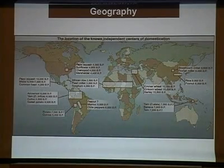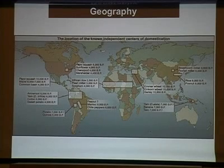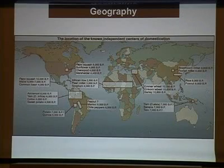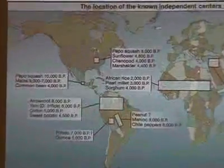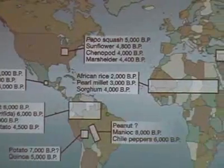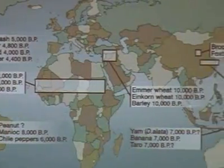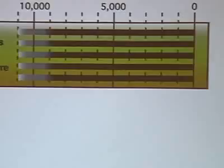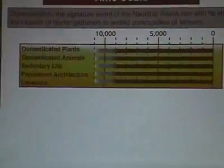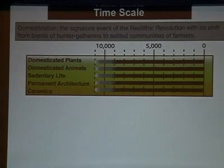One remarkable fact about domestication is that it started independently in multiple centers around the world at almost exactly the same time — about 10,000 years ago — in southern Mexico, South America, Africa, the Middle East, and Asia. These were not people who spread the idea around the world; independently, people simultaneously became farmers and switched from hunters and gatherers. At approximately the same time, there were also domesticated animals, sedentary life, permanent architecture, and ceramics.